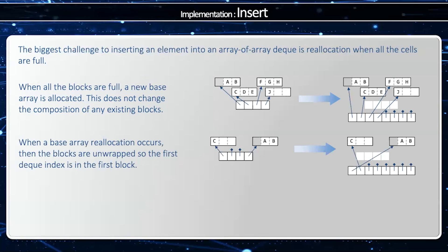And then when I reallocate these, then I'm going to put A, B, and then C in the correct order. So we always want to unwrap our blocks when we allocate.